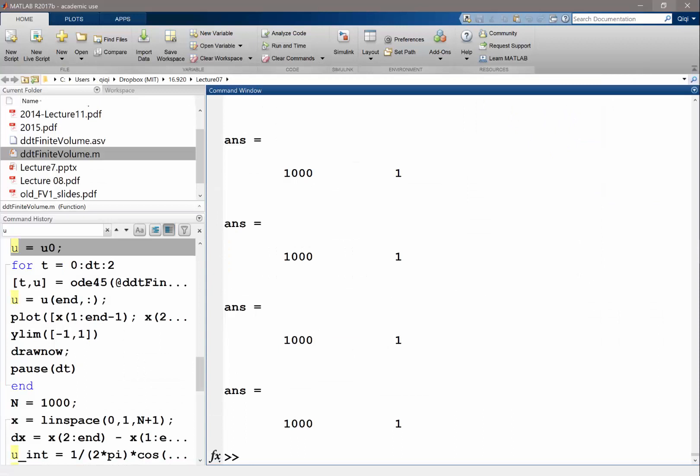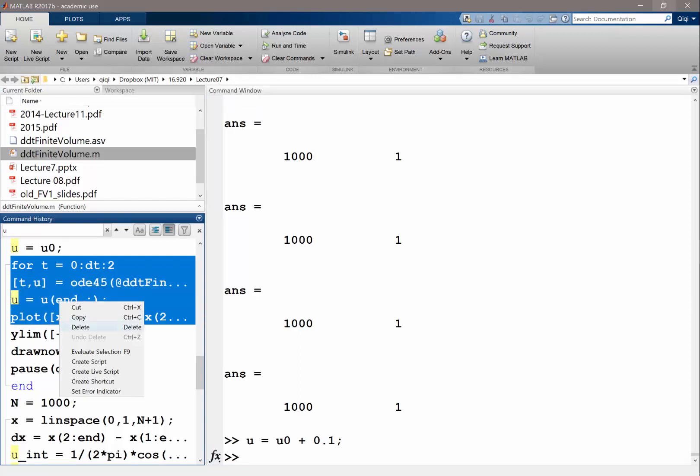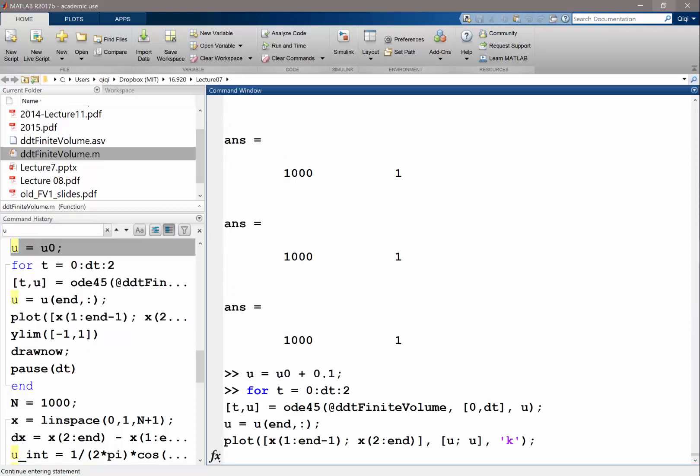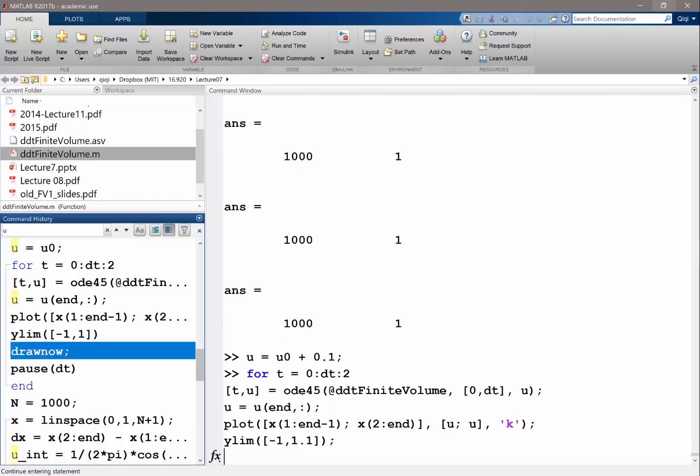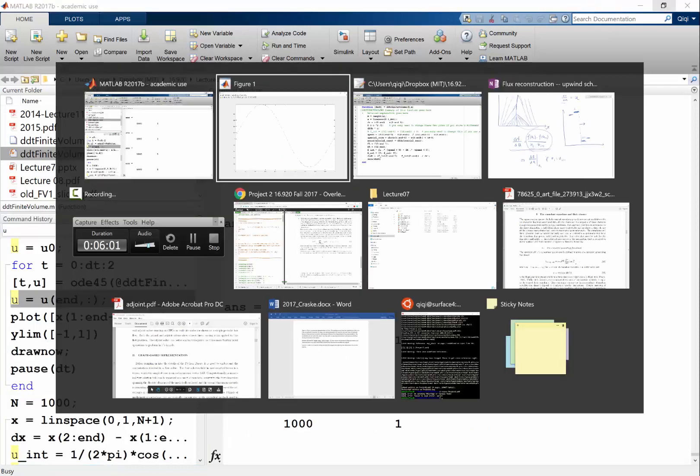Alright, for example, if we make u equal to u0 plus 0.1 to make it more interesting, the shock wave actually moves. We can do the same except ylim will be different - ylim(-1, 1.1). Draw now, pause, evaluate.